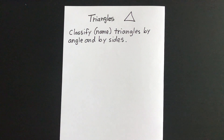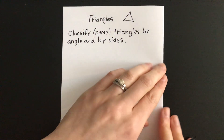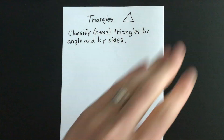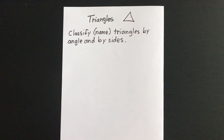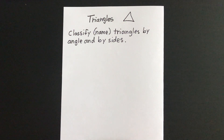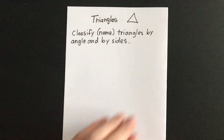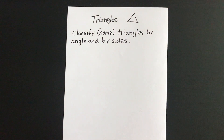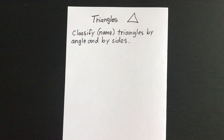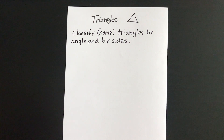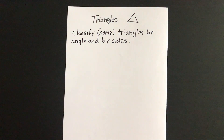Alright, hello again. We're going to get started with lesson number two over video. So today we are working on triangles. Now you have known what a triangle is probably since before you were in kindergarten, but there's always new stuff to learn. So today we're working on classifying — another way of saying that would be to name or organize triangles by angle and by sides.